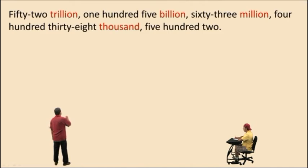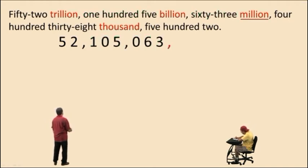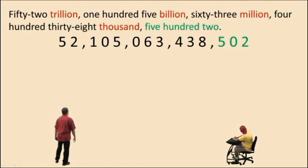Now, here is a number written as a word statement, and now let's write the number using digits. Fifty-two trillion, one hundred five billion, sixty-three million. Now, notice before the six we put a zero because we must have three digits within each period, except for the first period. Four hundred thirty-eight thousand five hundred two. There we go.